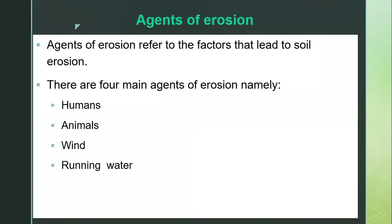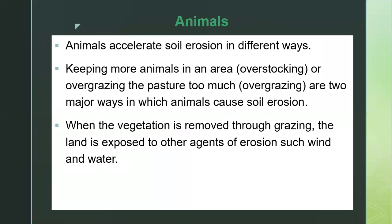The other two agents are animals and wind. Let's start with animals. Animals accelerate soil erosion in various ways. The two main ways animals cause soil erosion are through overstocking — that is, keeping more animals in a single area — and overgrazing — that is, grazing the animals too much.